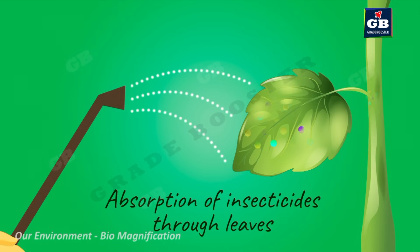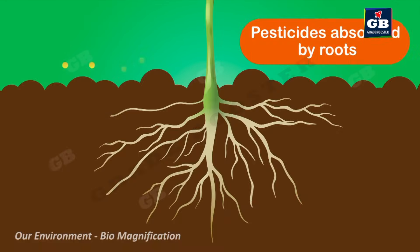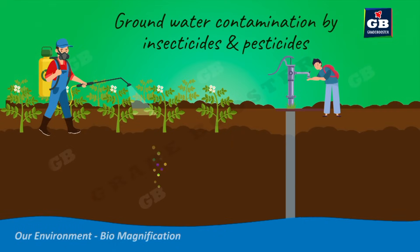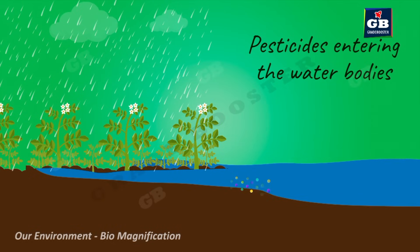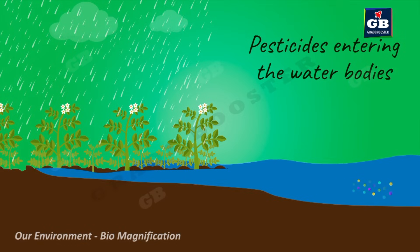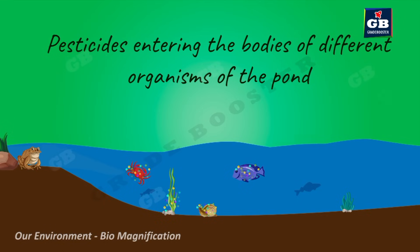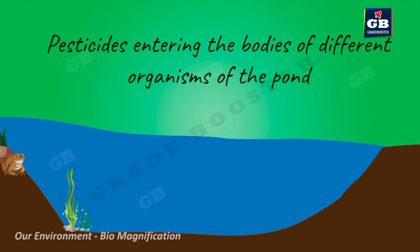Pesticides enter plant bodies in two ways: first, when pesticides are sprayed on leaves, the leaves absorb them into their bodies. Second, insecticides that fall on the ground mix with soil and are absorbed by plant roots along with water and minerals. Sometimes pesticides mixed with soil seep down and contaminate groundwater. Due to heavy rains and floods, these pesticides can reach water bodies like ponds and rivers, where pesticide and insecticide residues enter the bodies of aquatic plants and animals.